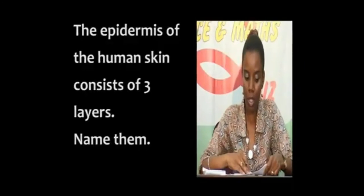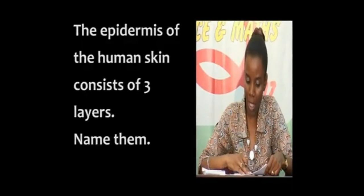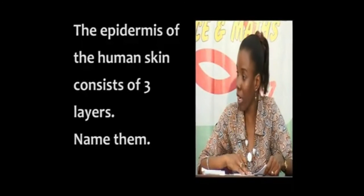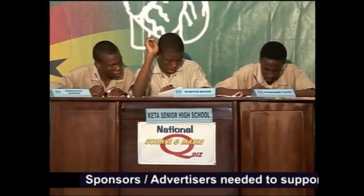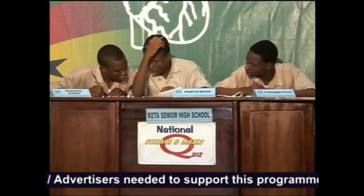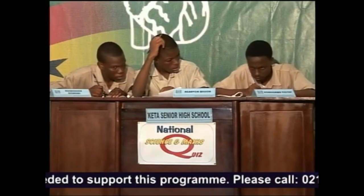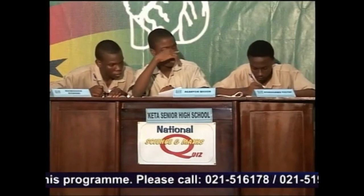Let's begin round four. Keta, please, in one attempt: the epidermis of the human skin consists of three layers. Please name them. Yes, Wilson. The Malpighian layer, the granular layer, and the cornified layer. Two out of three.